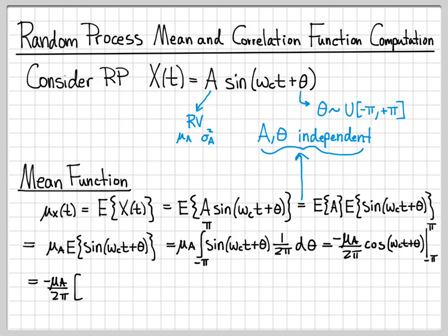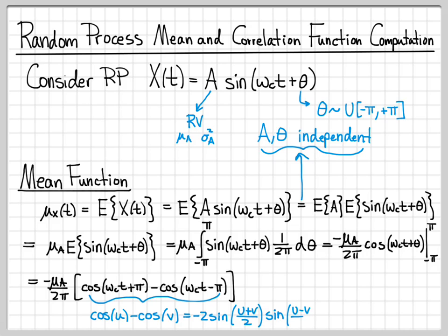So if I do that, I have to evaluate it at pi and then subtract off at minus pi. And then if I look at this, this has a special form. This looks like form cosine u minus cosine v. Well, that is equal, if you go look at your trig identities, to negative 2 sine of u plus v over 2 times sine of u minus v over 2.